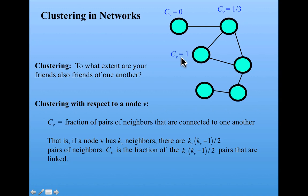As we said before, the clustering with respect to this node is one, because its two neighbors have a link between them. So all possible pairs of neighbors are linked to this node.